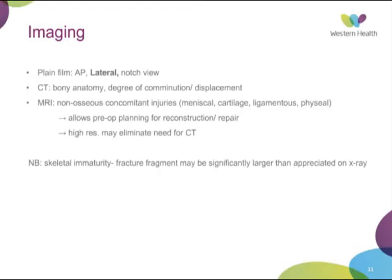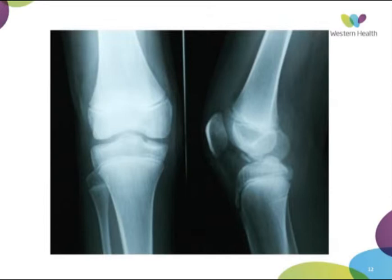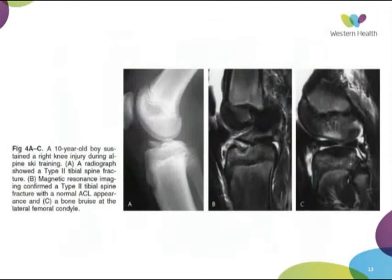It's important to note that the majority of these fractures occur in skeletally immature patients, so the actual fracture fragment may be significantly larger than what you can see on x-ray, because a lot of it has not ossified yet. This is an AP and lateral view of a type 3 tibial eminence fracture — most appreciated on the lateral view, with the fragment completely displaced. This is an MRI of a 10-year-old boy with a type 3 tibial eminence fracture — the ACL is intact, but he does have some bruising of the lateral femoral condyle.